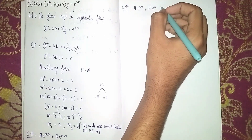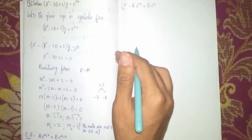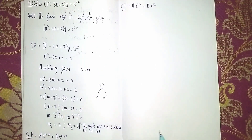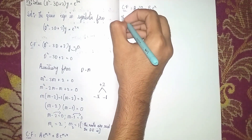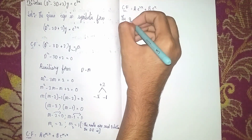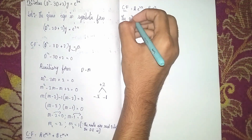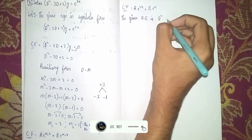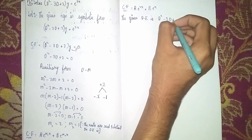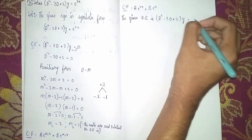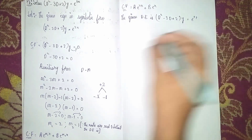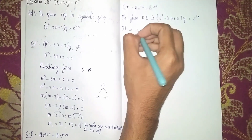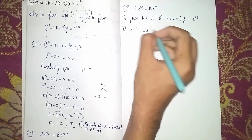To find the particular integral, we first write the given differential equation: (D² - 3D + 2)y = e^(3x). This can be written in the form f(D)·y = X, where f(D) = D² - 3D + 2 and X = e^(3x).